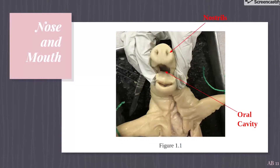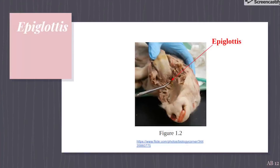Most normal breathing takes place through the nasal cavity, but the oral cavity can be used to supplement or replace the nasal cavity's functions when needed. Figure 1.2 looks at the epiglottis. The epiglottis is a flap that acts as a switch between the trachea and the esophagus, responsible for stopping food from entering the trachea to prevent choking.